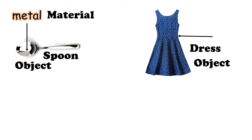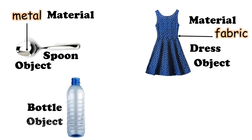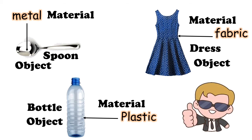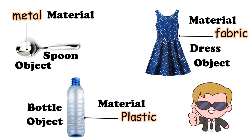Now look at the next example — dress. Dress is the object. What material makes this dress? Fabric — very good. Fabric is the material. Let us look at another object — bottle. Bottle is the object. Which material is making this bottle? Plastic — very good. Plastic is the material, bottle is the object.